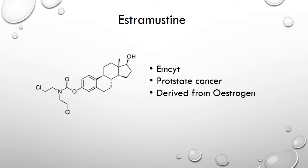Estramustine is another microtubule-inhibiting cancer agent used to treat metastatic and progressive prostate cancers in the United States. It is derived from the hormone estrogen. It works by depolymerizing the microtubules, and it is selectively taken up by prostate cells, keeping healthy cells minimally exposed.